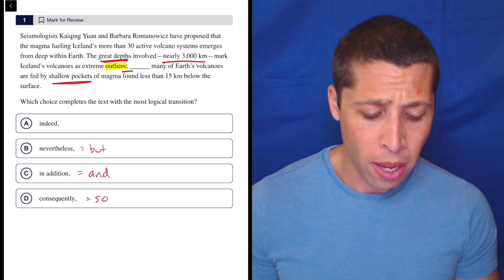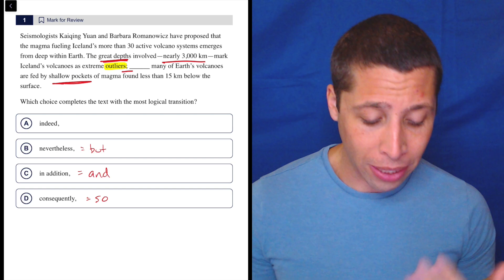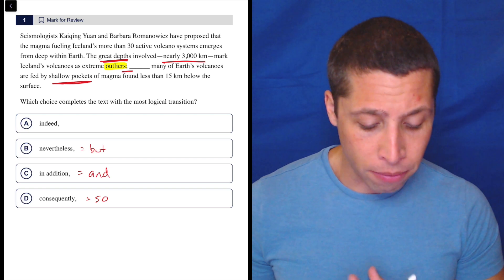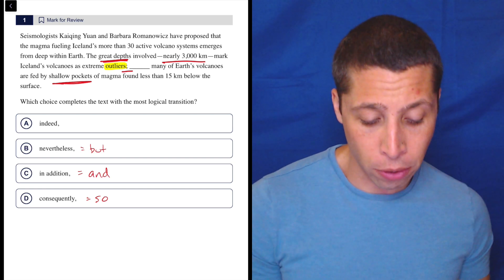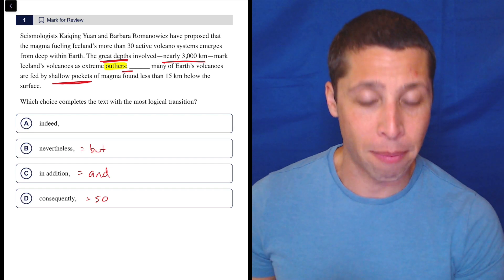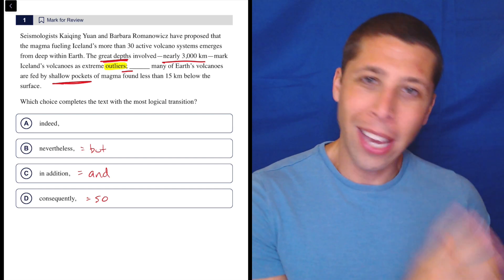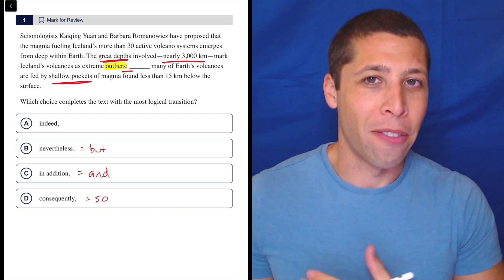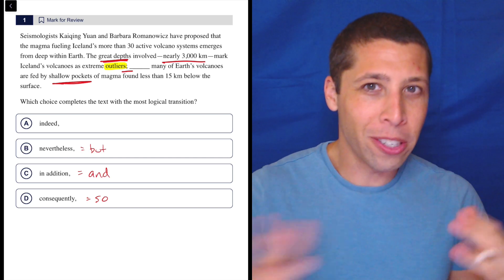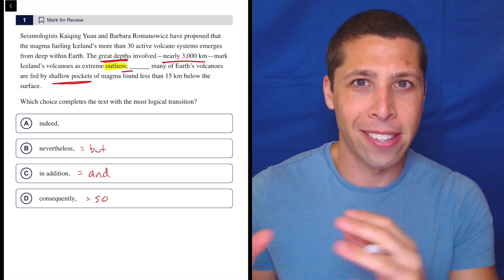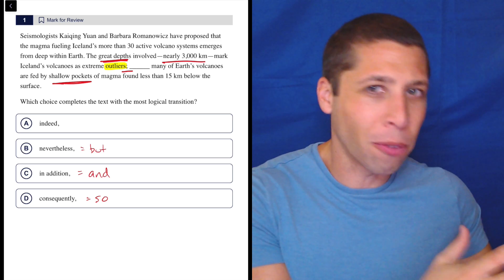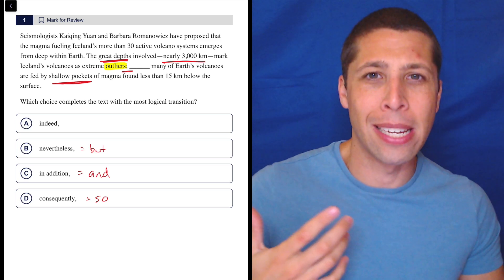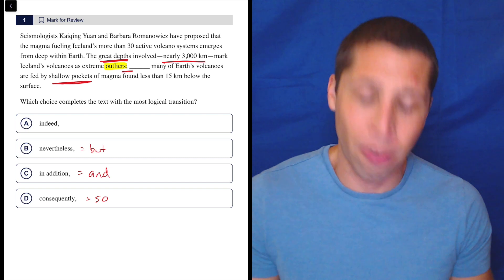Consequently is a so. And that's a cause and effect word, right? So we can try that out too. The great depths involved mark Iceland's volcanoes as extreme outliers. So many of Earth's volcanoes are fed by shallow pockets of magma. Well, the other volcanoes are not affected by the Iceland one. They're separate things, right? So there is no cause and effect there. It's not that Iceland's volcanoes being deep affect the other volcanoes and cause them to be shallow. It's not right.